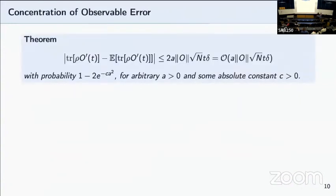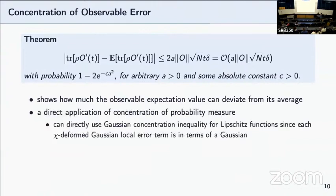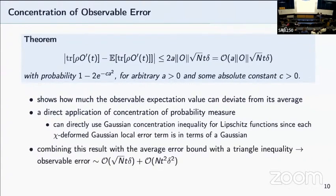Now, to get to the second part of the proof, with the initial bound we have, we want to prove the square root scaling. So what we want to show is how much the observable expectation value can deviate from its average. This is simply a direct application of concentration of probability measure. Because the way we define G_i's is in terms of a Gaussian, this means that we can apply this Gaussian concentration inequality for Lipschitz functions. This gives us, using a triangle inequality, combining this bound and the previous second order bound, we're able to get our main results with leading order terms scaling with square root of the number of qubits times time times delta.